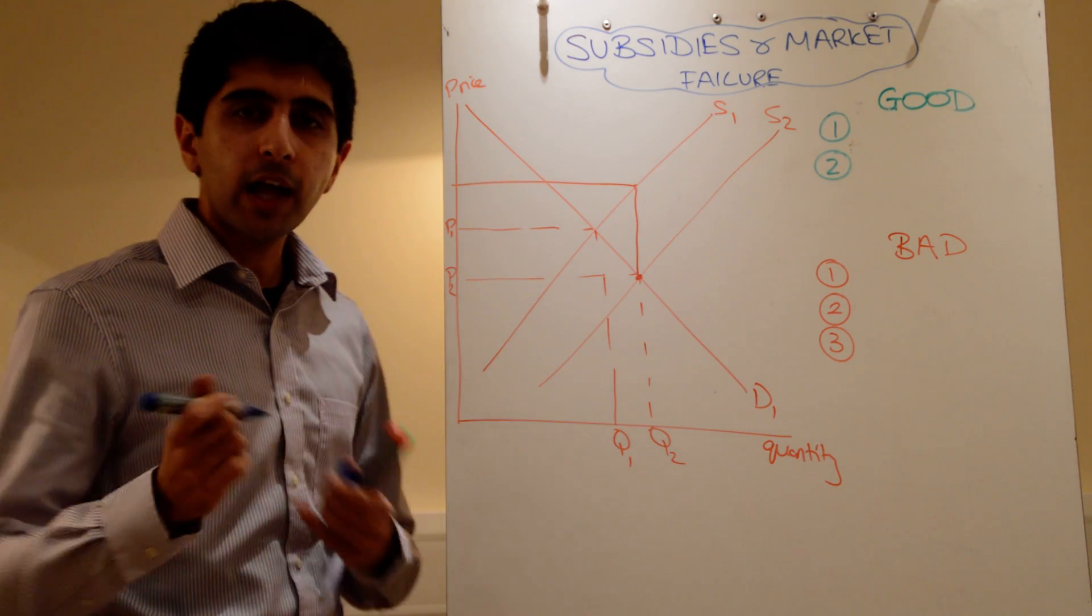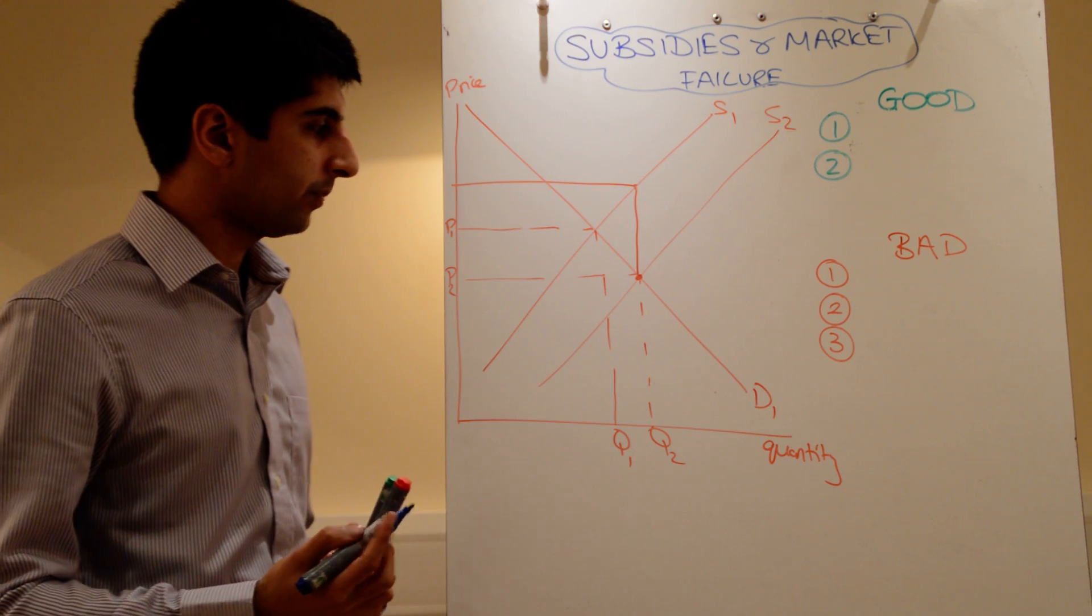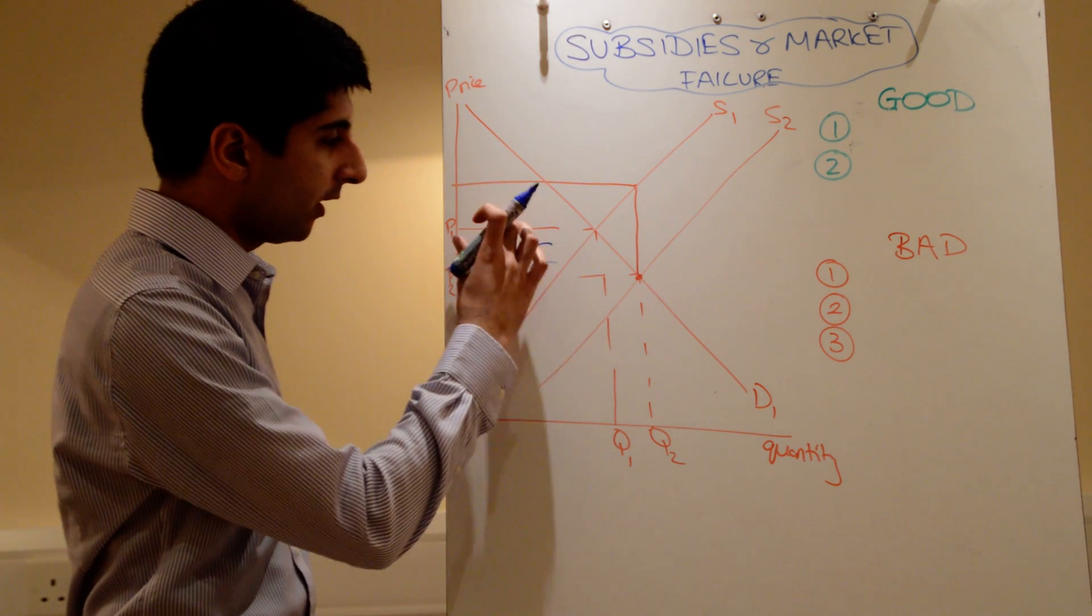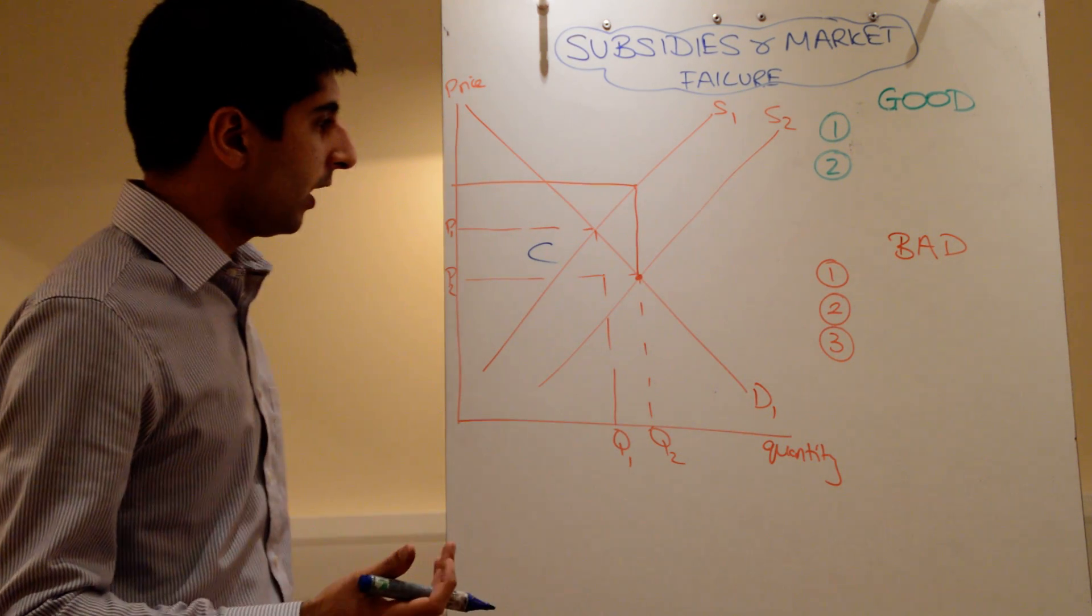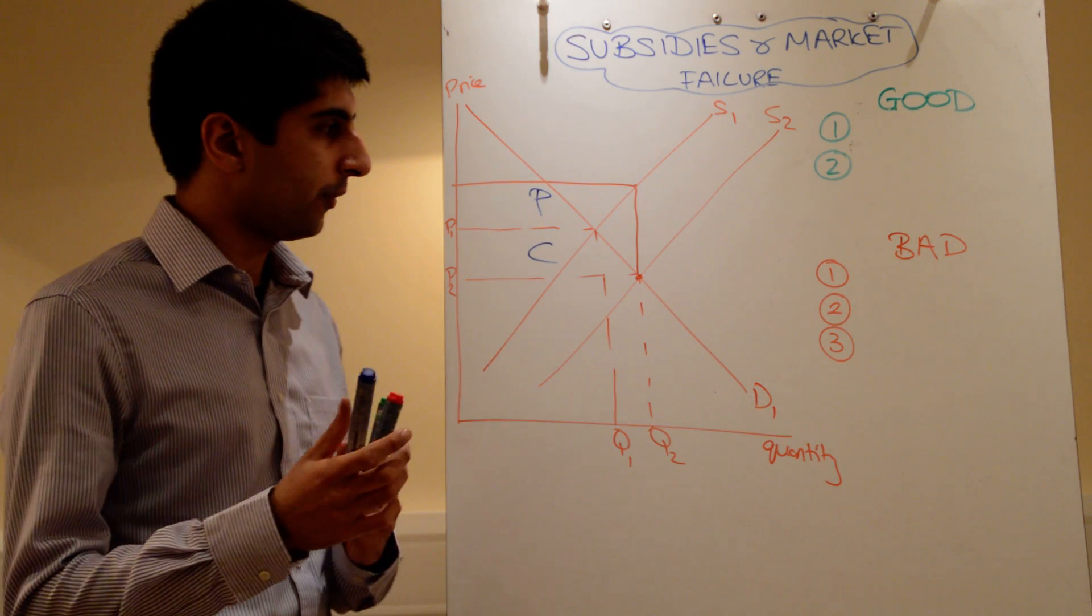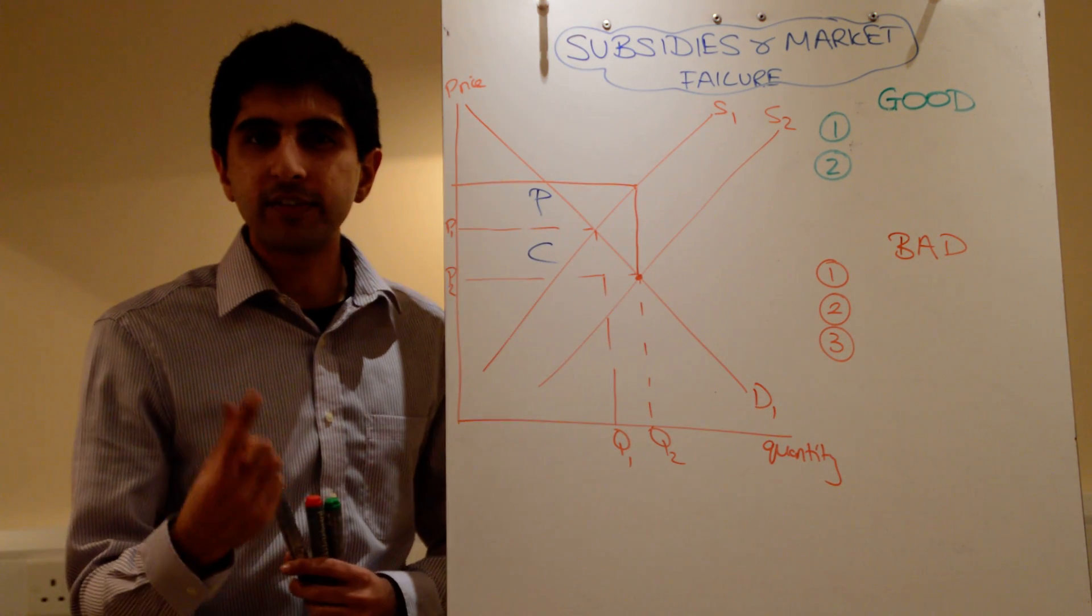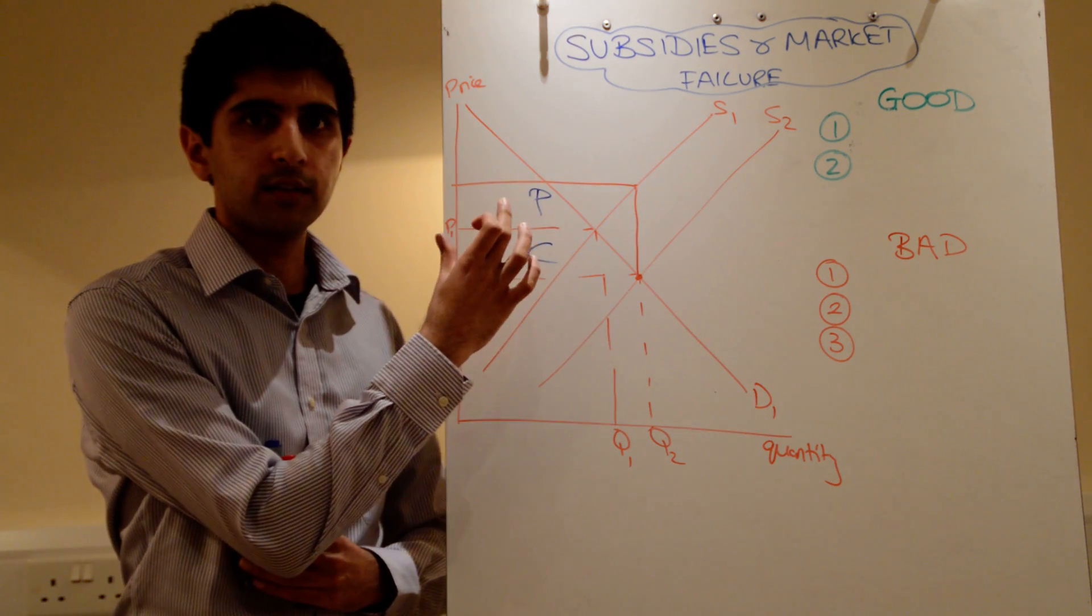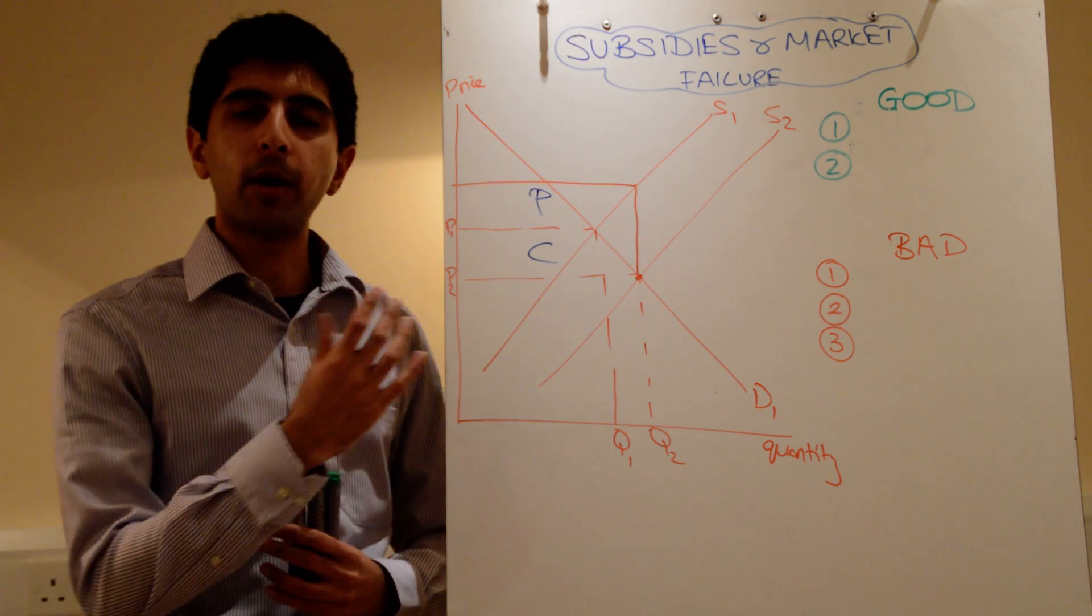But more than that, we can work out just who benefits from the subsidy. Consumers benefit from the lower price. So, that little chunk there is how much the consumers benefit from. Whereas the producers benefit that much up top. They gain the rest of it. Which tells you that not all of the subsidies passed on to consumers. Some of it is, but not all of it is. Some of it is kept in the firm by producers there.